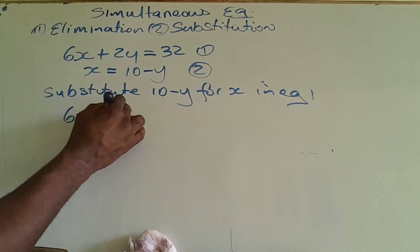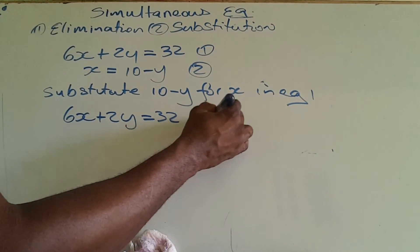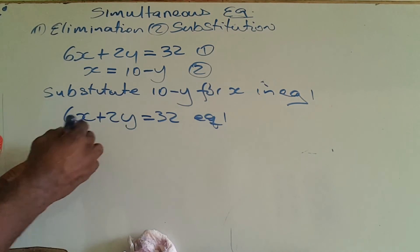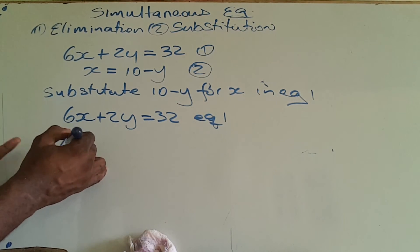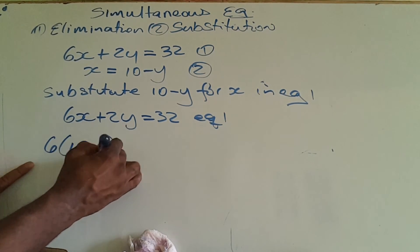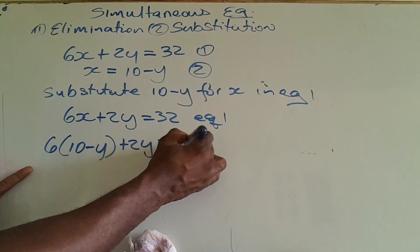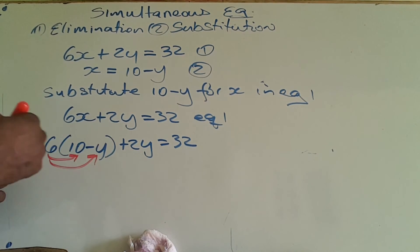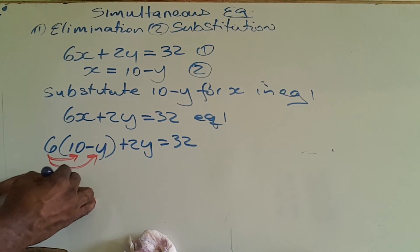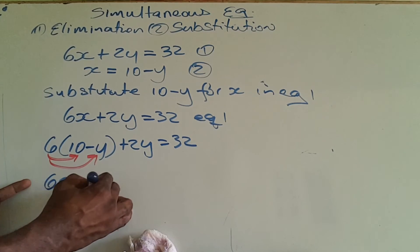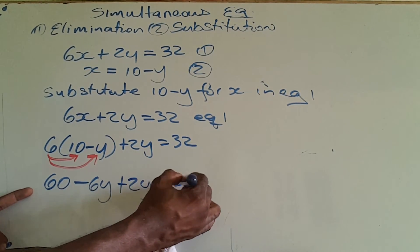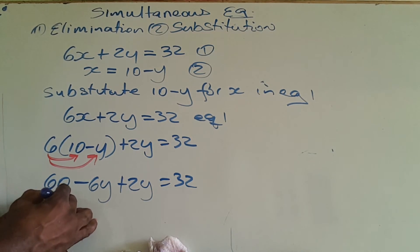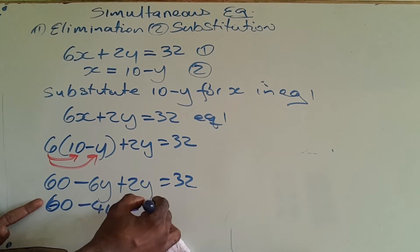I'll write equation 1 now and substitute 10 minus y wherever I see x. So it becomes 6 times (10 minus y) plus 2y equals 32. Distributing the 6: 6 times 10 is 60, and 6 times negative y is negative 6y. So I have 60 minus 6y plus 2y equals 32.